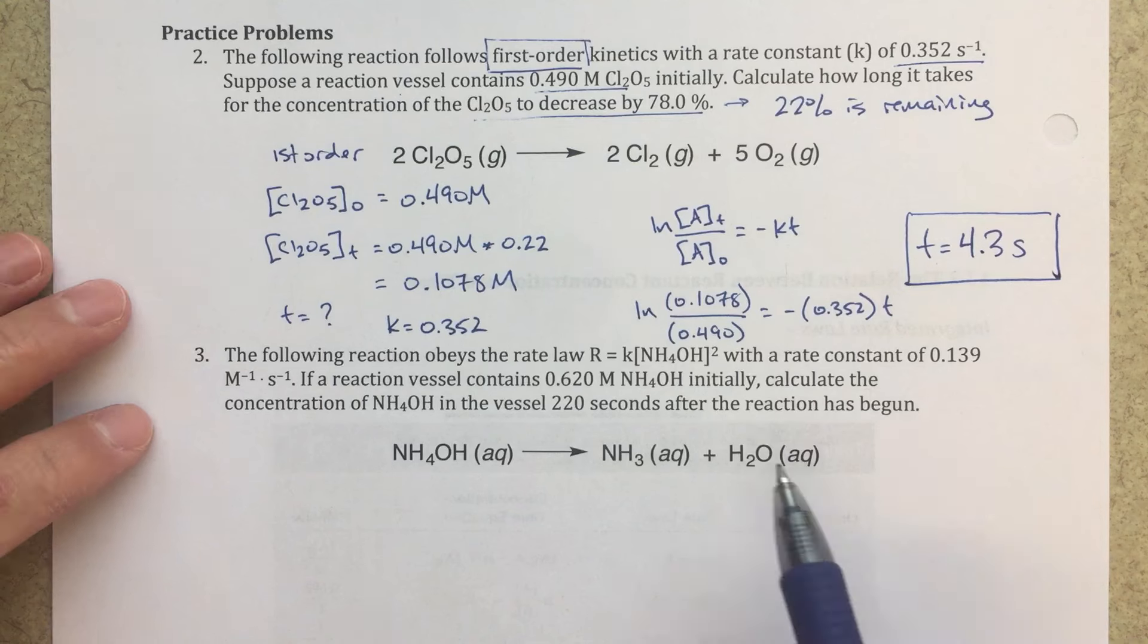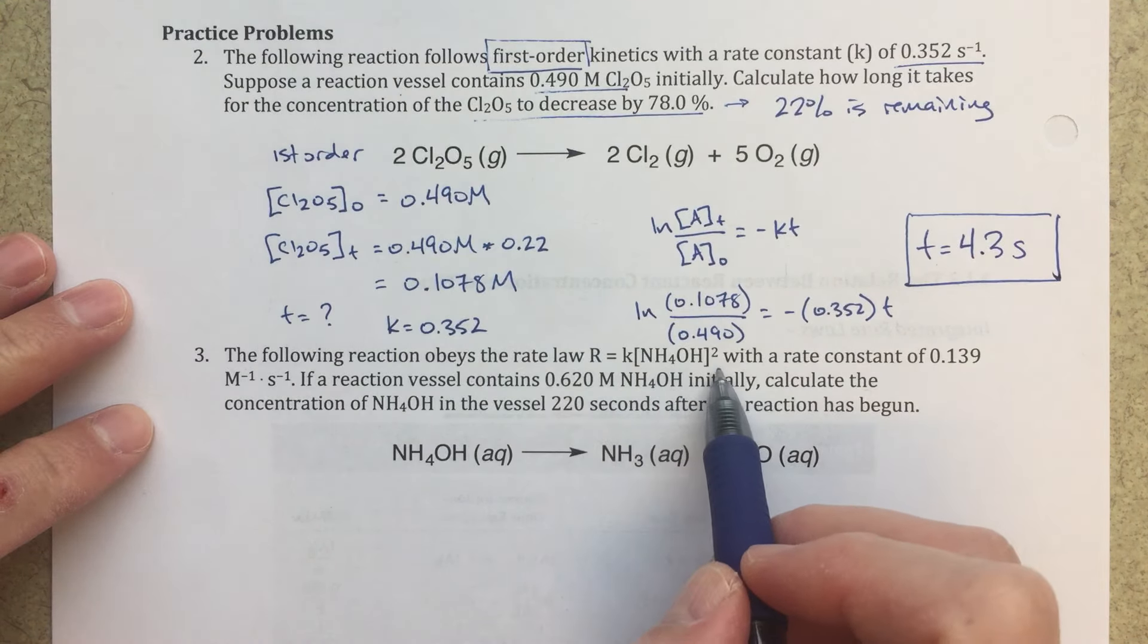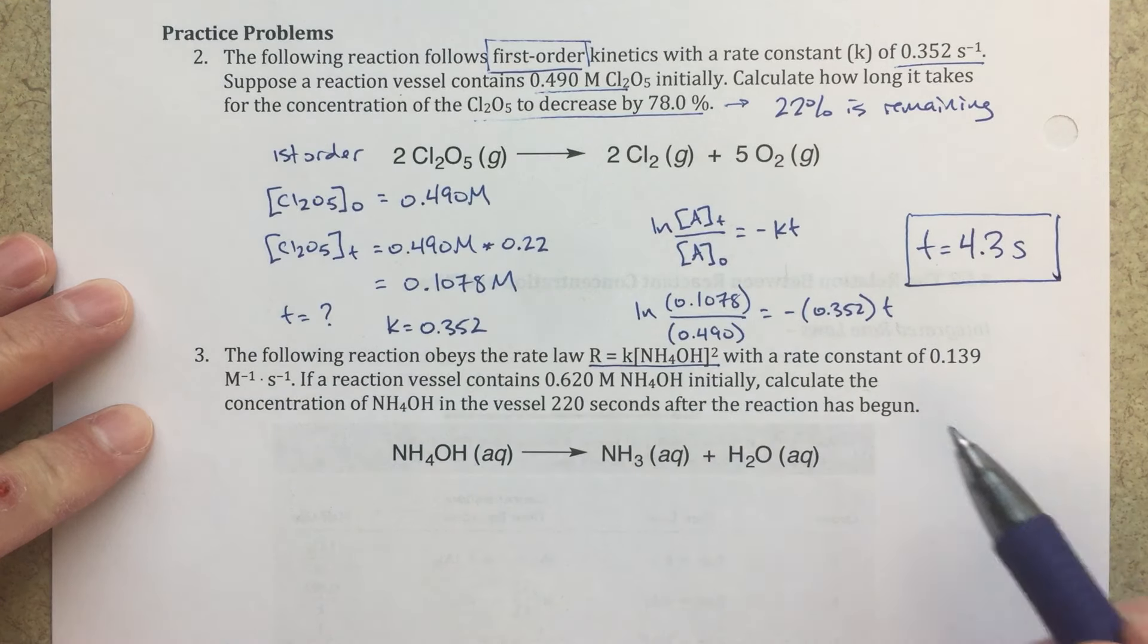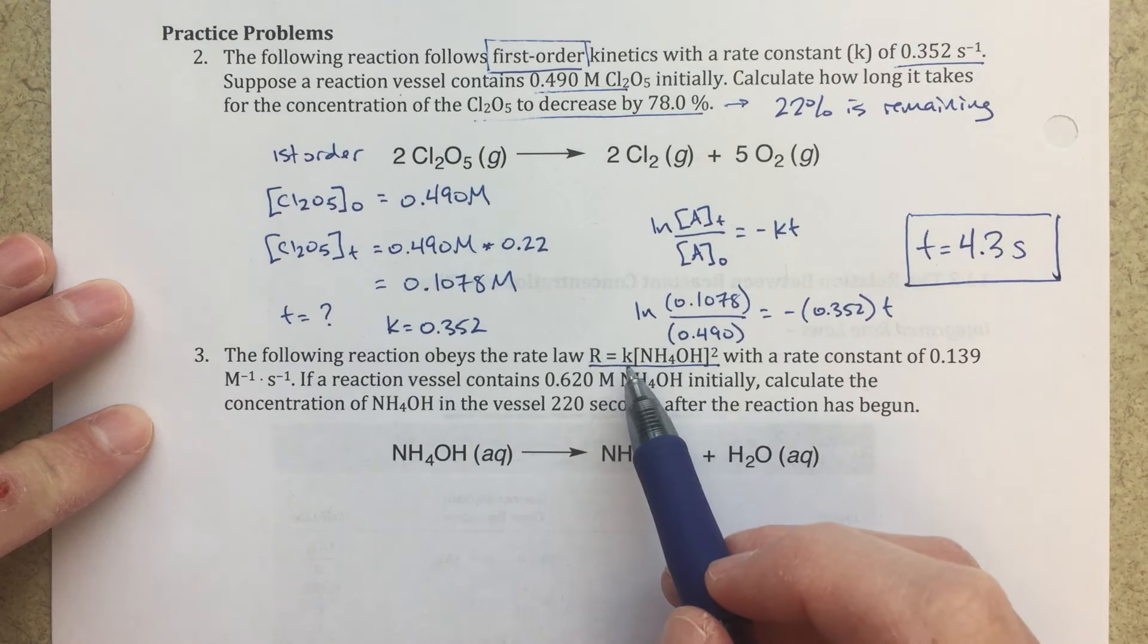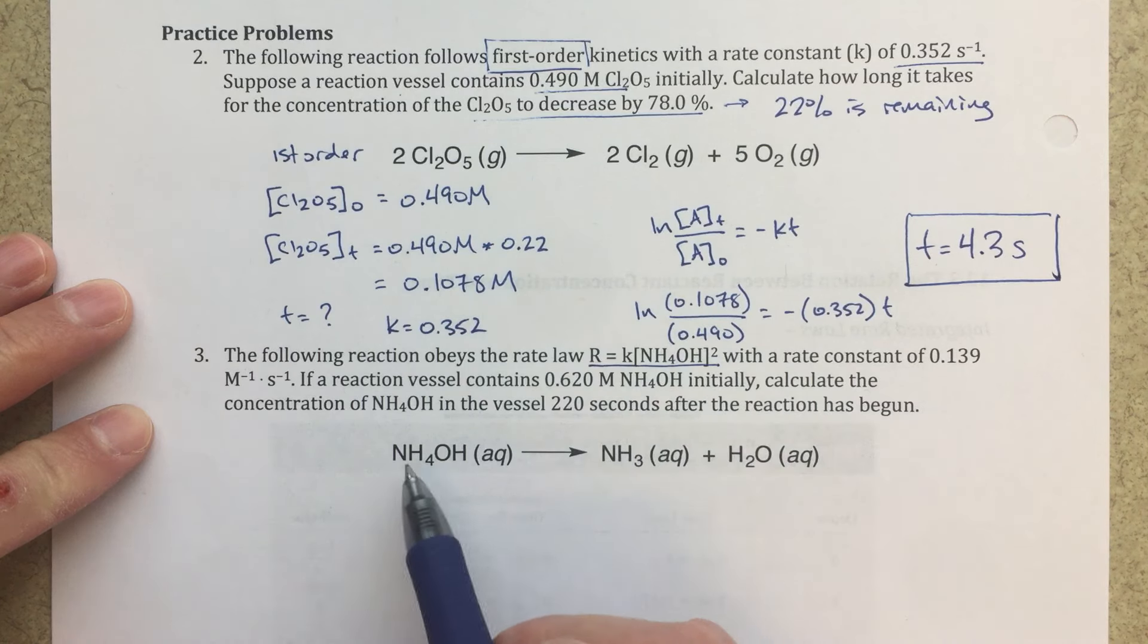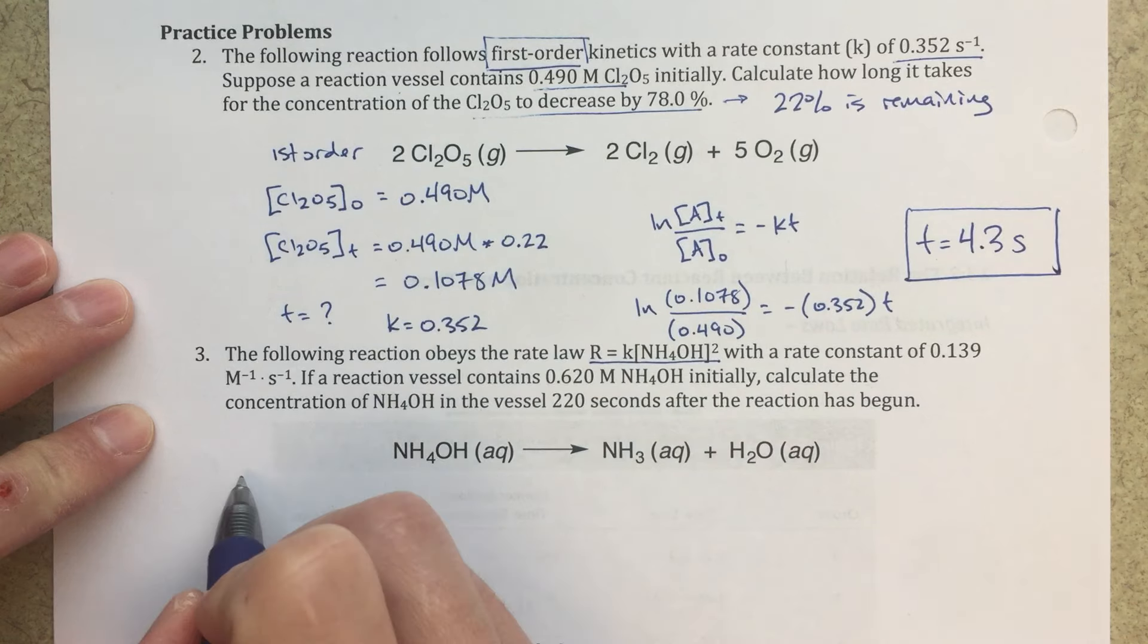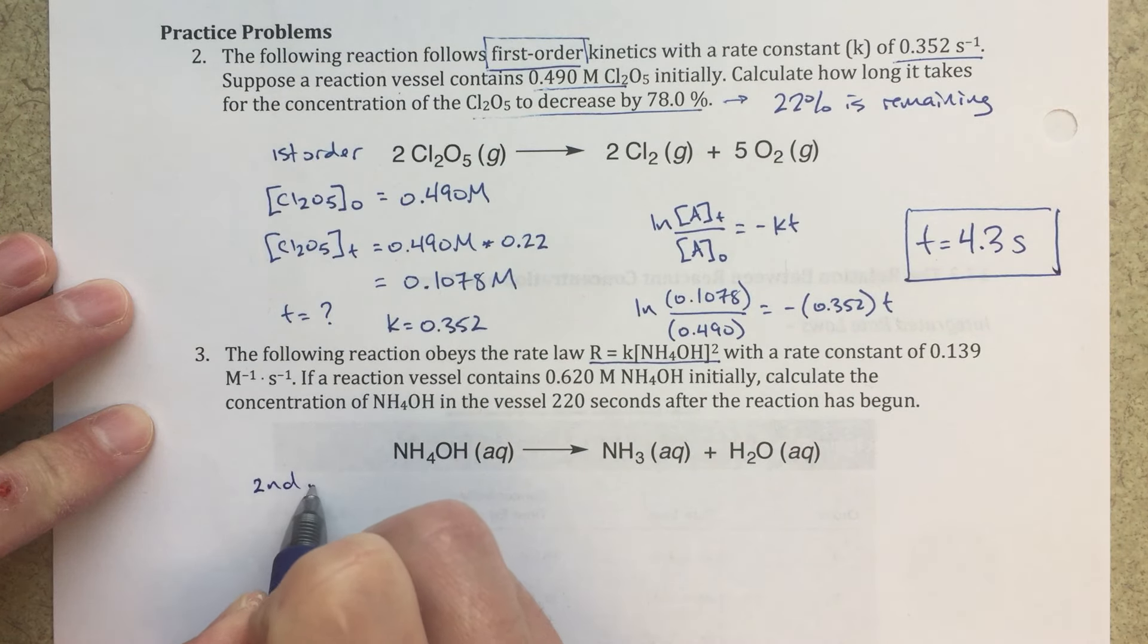So the next one, it's giving us the rate law. And in the rate law, it's telling us that it's second order. So I can look at this rate law, R equals K, my concentration of my reactant, squared. So that is telling me that this is second order. So let's, again, just organize our information over here, second order.